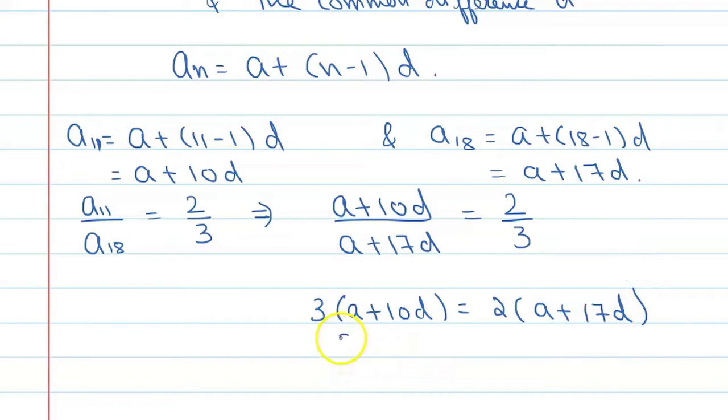So this is equal to 3a plus 30d equal to 2a plus 34d. So this is 3a minus 2a equal to 34d minus 30d. This gives us a equal to 4d.